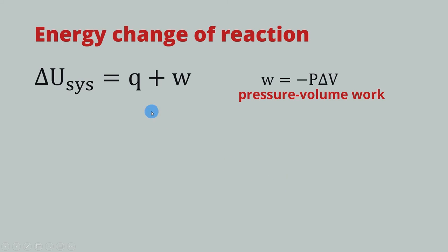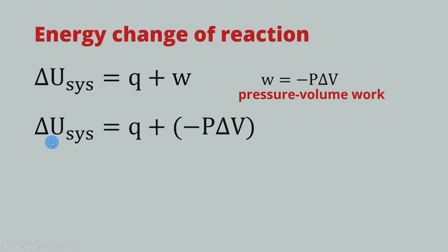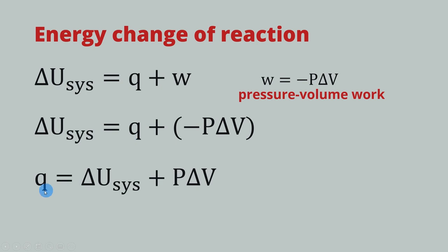From the previous video, the energy change of a reaction can be in the form of heat and work. We focus on the pressure-volume work, which is negative pressure times the change in volume. If we substitute this into the delta U equation, we get that the change of internal energy of the system is equal to Q plus this pressure-volume work. We can rearrange this equation to get the value of Q: heat is equal to the internal energy change of the system plus work.